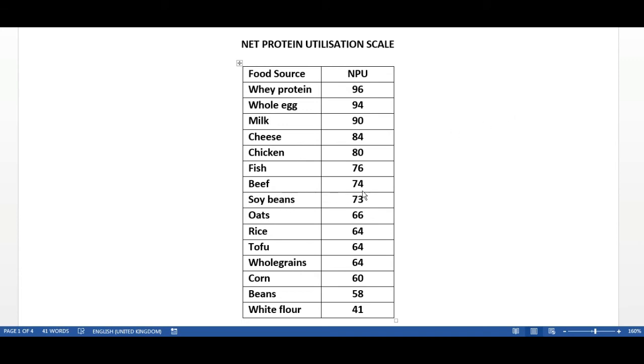And what we see, it's quite a clear trend, is the animal sources of protein are clearly best when it comes to absorption, whereas the vegetarian sources closer down the bottom have a lower rate of absorption. So clearly, if your target is just to get protein in and the most bang for your buck, then you want to go with what's higher up on the list.